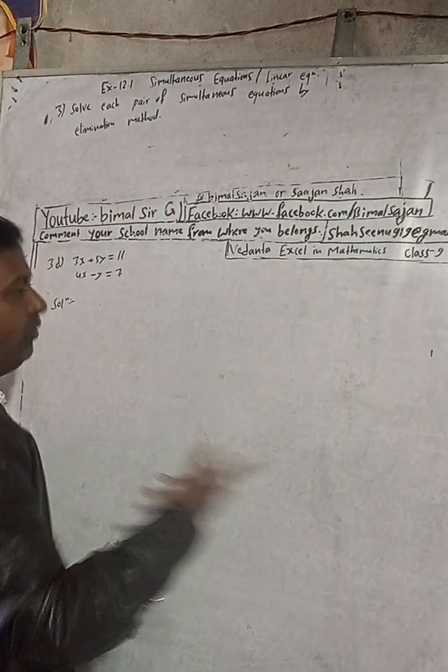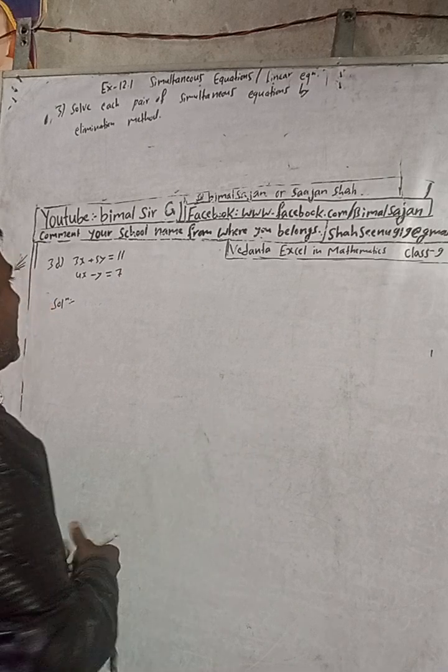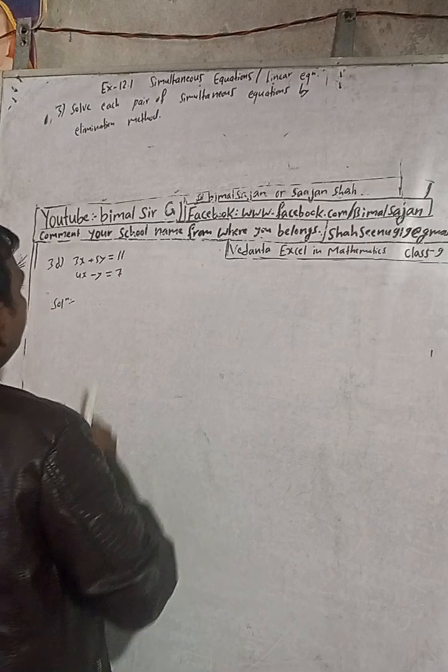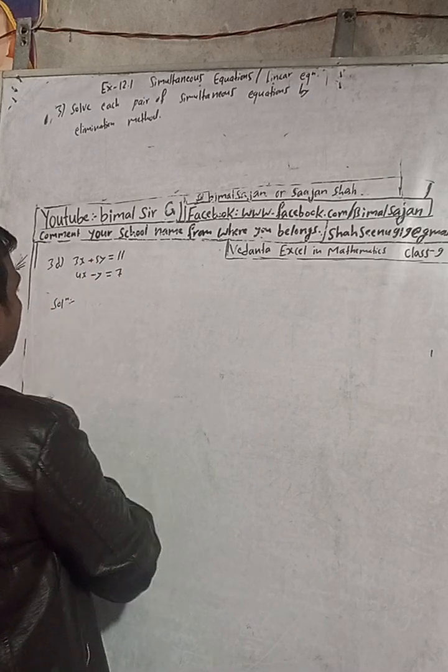Elimination method means what? We have to either cancel x or y by adding or subtracting. So see, the equation is here.